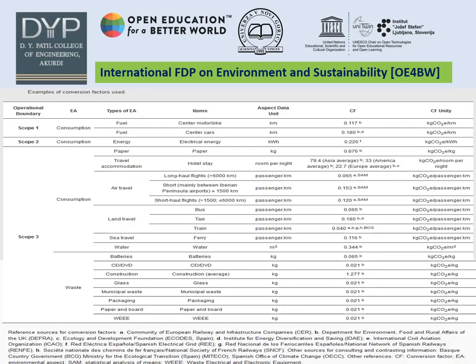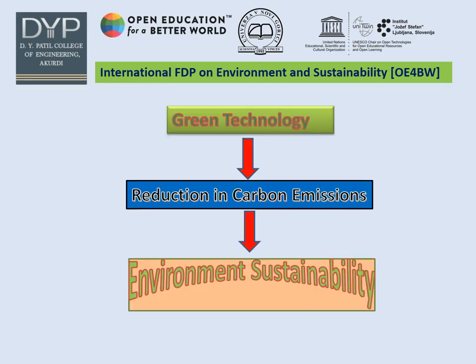As discussed, the conversion factor must be considered. There is a particular table showing components such as car, electrical energy, paper, hotel, taxi, and bus — each classified with a corresponding carbon factor. Ultimately, green technology aims at reducing carbon emissions so that the environment achieves its sustainability.